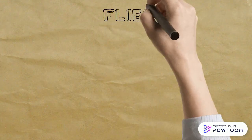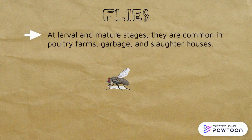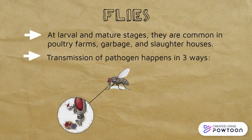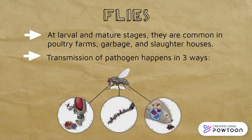Next up is flies, at both the larval and mature stages. They are common in poultry farms, garbage sites, and slaughterhouses. The transmission of pathogens happens in three ways: the pathogens stick to the flies' body parts — specifically the legs and proboscis; the pathogens are deposited via vomit onto food, because flies feed by liquifying food in regurgitated saliva; and the pathogens are deposited in their feces after passing through the gut.